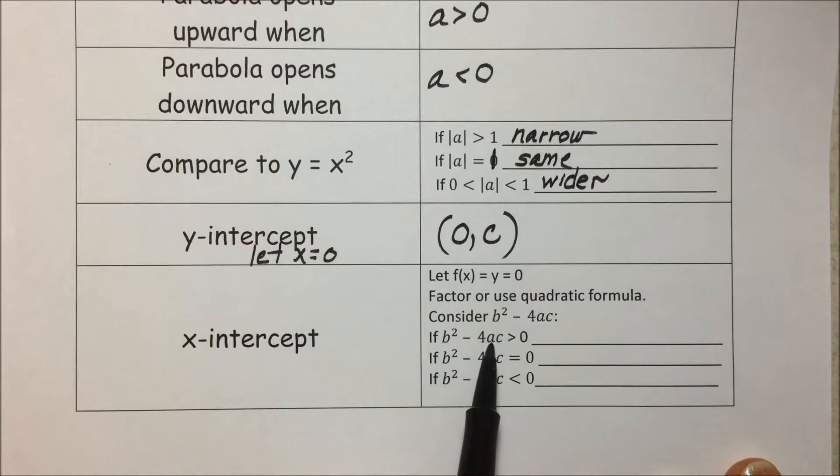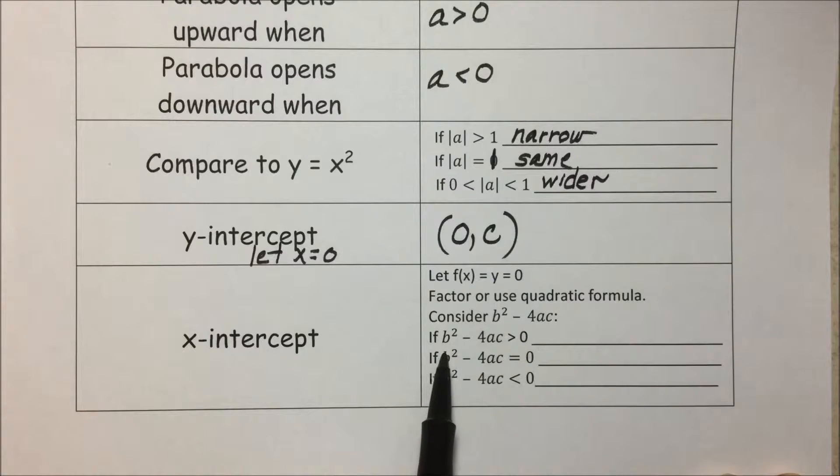But to help us along the way to find the x-intercepts, consider the discriminant, which is the radicand from the quadratic formula, b² - 4ac.